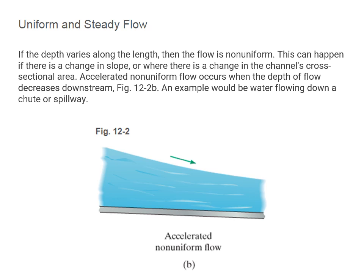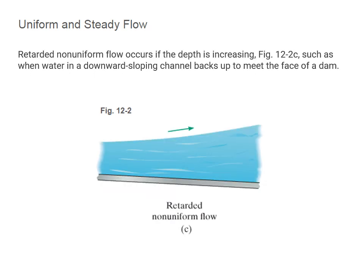If the depth varies along the length, the flow is non-uniform. This can happen if there is a change in slope or a change in the channel's cross-sectional area. Accelerated non-uniform flow occurs when the depth of flow decreases downstream — an example would be water flowing down a chute or spillway. Retarded non-uniform flow occurs if the depth is increasing, such as when water in a downstream sloping channel backs up to meet the face of a dam.